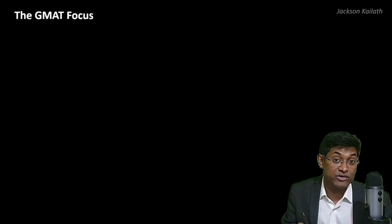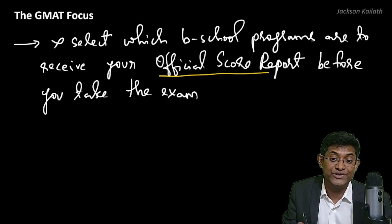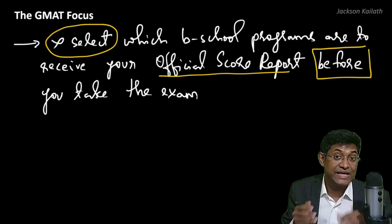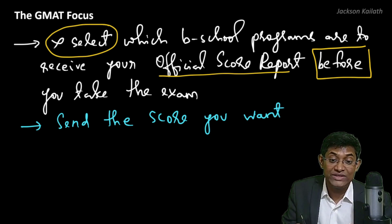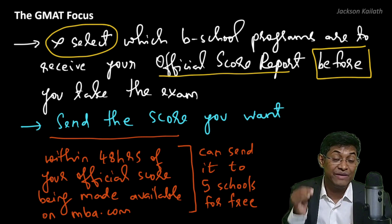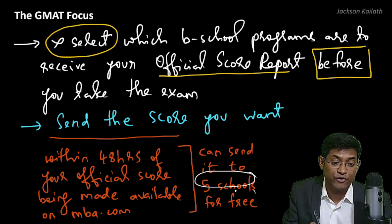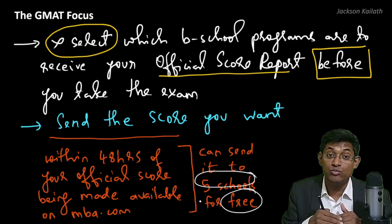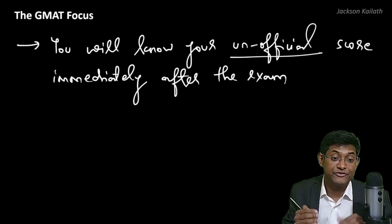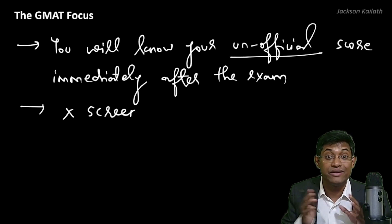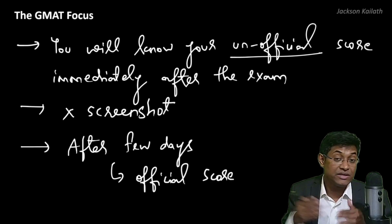When it comes to reporting your score, you don't need to select which B-school programs will receive your official score report before you take the exam. Once you're done, you can send the score to whichever schools you want. Within 48 hours of your official score being made available at mba.com, you can choose to send your score to five schools for free, and you can pay to send it to additional schools. You will see your unofficial score immediately after completing the exam, but you're not allowed to take a screenshot of it. Your official score will come after a few days — typically three to four days.